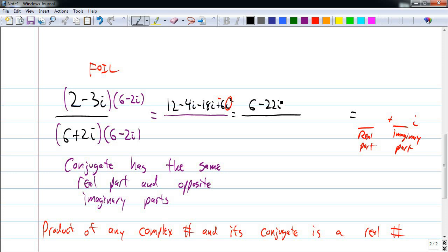My denominator, multiplying this out, first is 36. Outer and inner cancel out. Outer is negative 12i. Inner is positive 12i. Those cancel out. And my last is negative 4i squared. But remember that the i is negative 1, which will make this positive. So this is going to be 40.